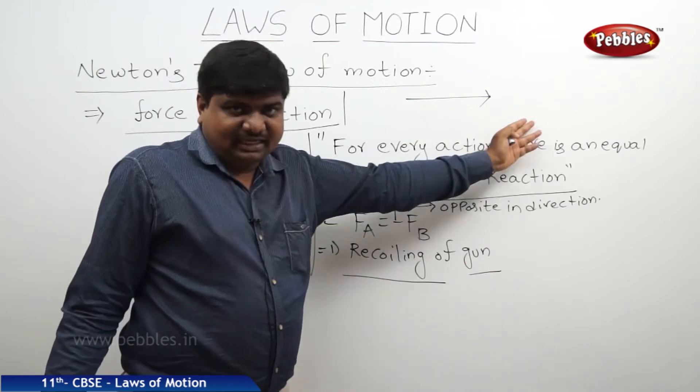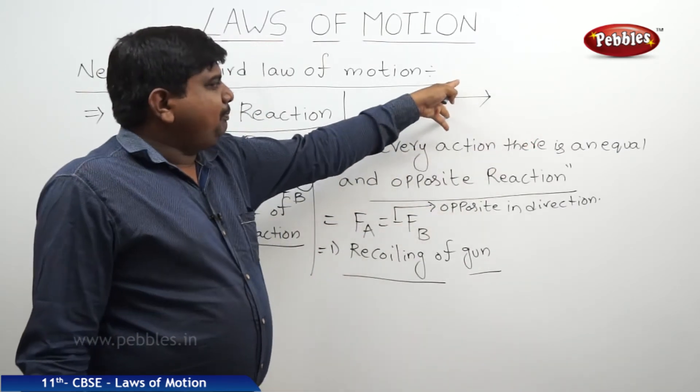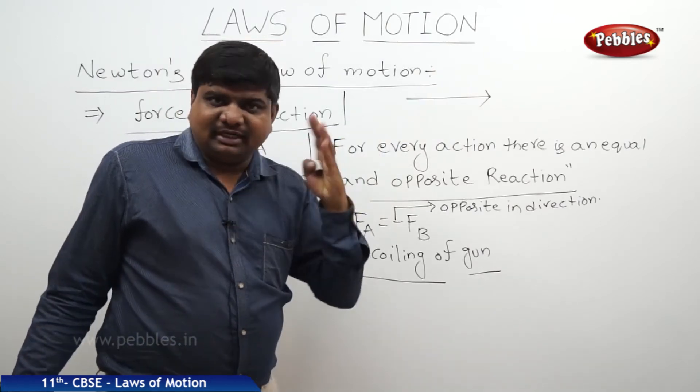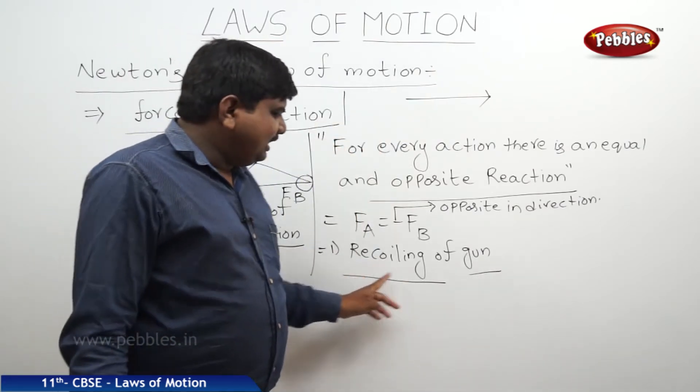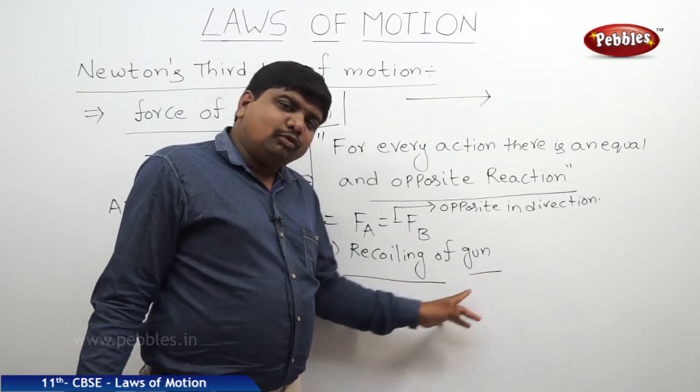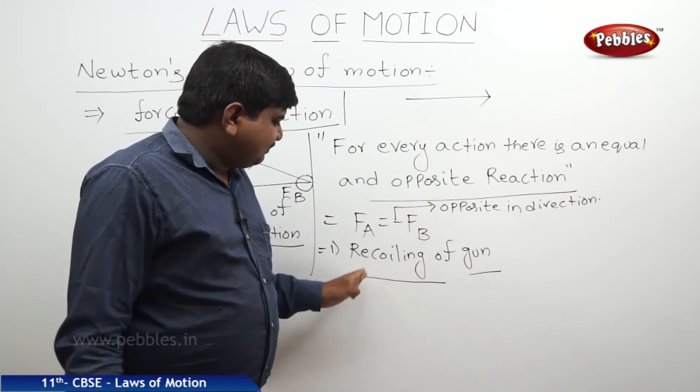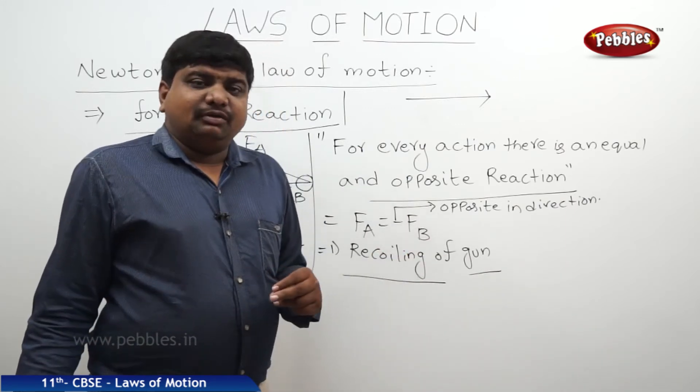To compensate this loss in the energy or to make the equilibrium of these two forces, the dependence on the shoulder is very important for a soldier. The recoiling of gun means the gun will move back after firing the bullet with the same speed. This is one of the examples for the Newton's third law of motion.